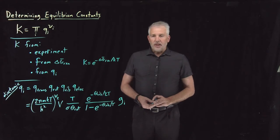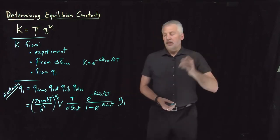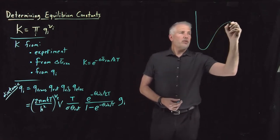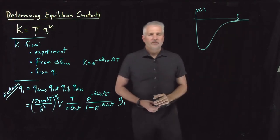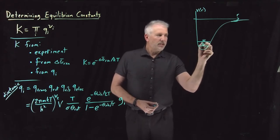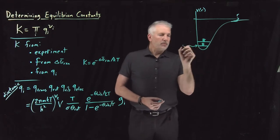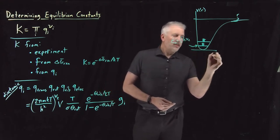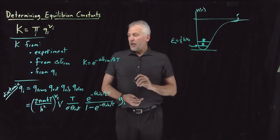There's one slight caveat we need to talk about, which is that when we've written down partition functions for diatomic molecules previously, we haven't had to worry too much about the zero of energy — but now we are going to have to worry about that. If I have some potential energy as a function of r for a diatomic molecule, there's some vibrational states and stacked on top of those there are some rotational states. When we've talked about those previously and said the energy of the ground state is ½hν, that's relative to the bottom of the potential well being the zero of energy.